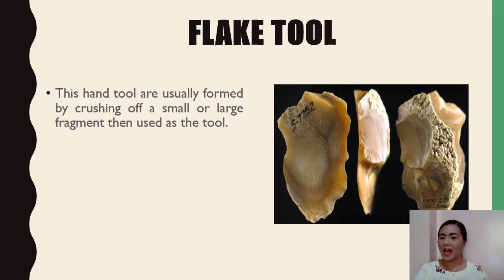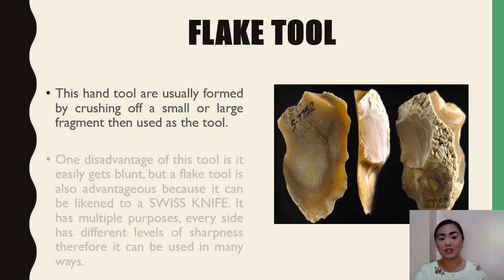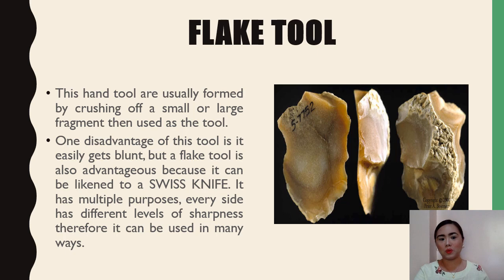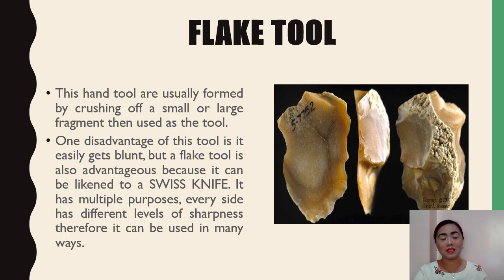The third type is the flake tool. These hand tools are usually formed by crushing off a small or large fragment, which is then used as the tool. One disadvantage is that a flake tool easily gets blunt. However, it is also advantageous because it can be likened to a Swiss knife — it has multiple purposes, with every side having different levels of sharpness. New flakes were very sharp but quickly became blunt during use and had to be resharpened through a process called retouching.